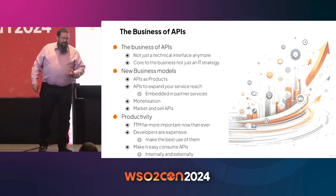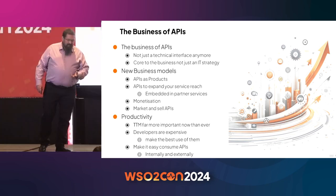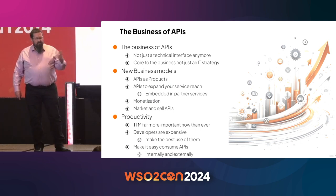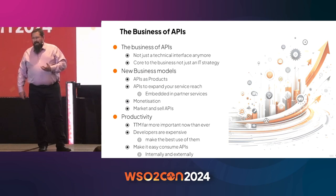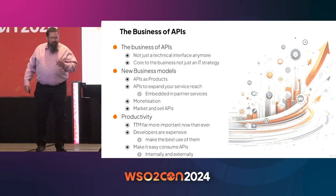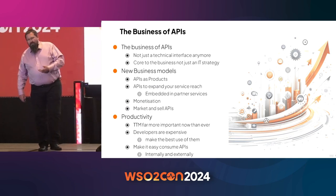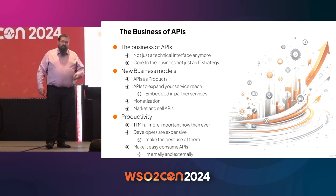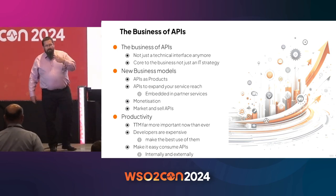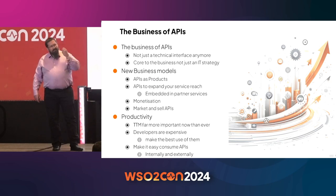APIs are becoming more core to the business. They're exposing new business models where data you previously had can now be utilized in new ways — it can be monetized. You can embed your services into partner data flows; we see that a lot in payment systems with the likes of PayPal, Klarna, et cetera. You need to not just expose your APIs and allow people to access them — you need to market them, sell them, and actually try to get people to buy and subscribe. Time to market is far more important, and you want to make it easy for both internal and external consumers to find and subscribe fast.